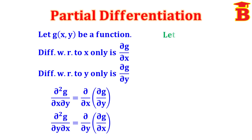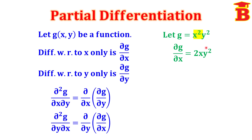Let us see one example. Let g equal to x² times y². Now we have to differentiate partially with respect to x, that is ∂g/∂x. We have to differentiate x only by treating y as constant. The x term here is x². Differentiating x² gives 2x. Into y², which is constant, so we write the same y².